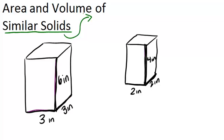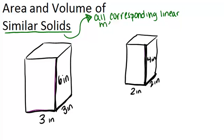It's the same as it is in two dimensions with shapes. It means that all corresponding measurements — and they have to be linear measurements, so anything that you would measure in units as opposed to units squared or units cubed — are proportional. So a linear measurement would be like an edge length, or a radius, or a diameter, or something like that.